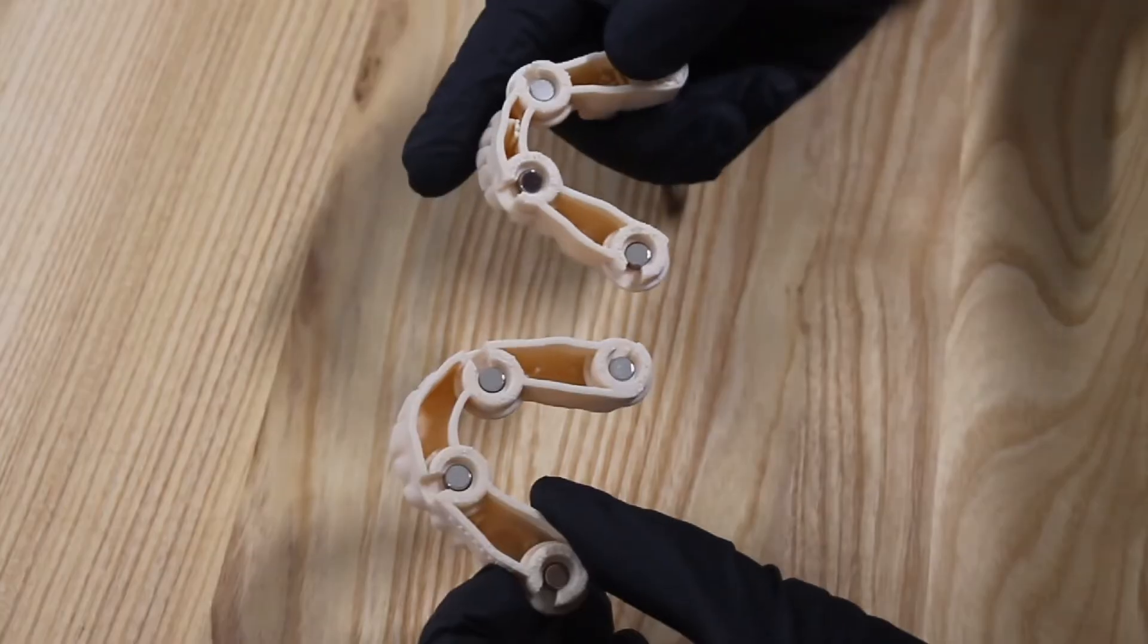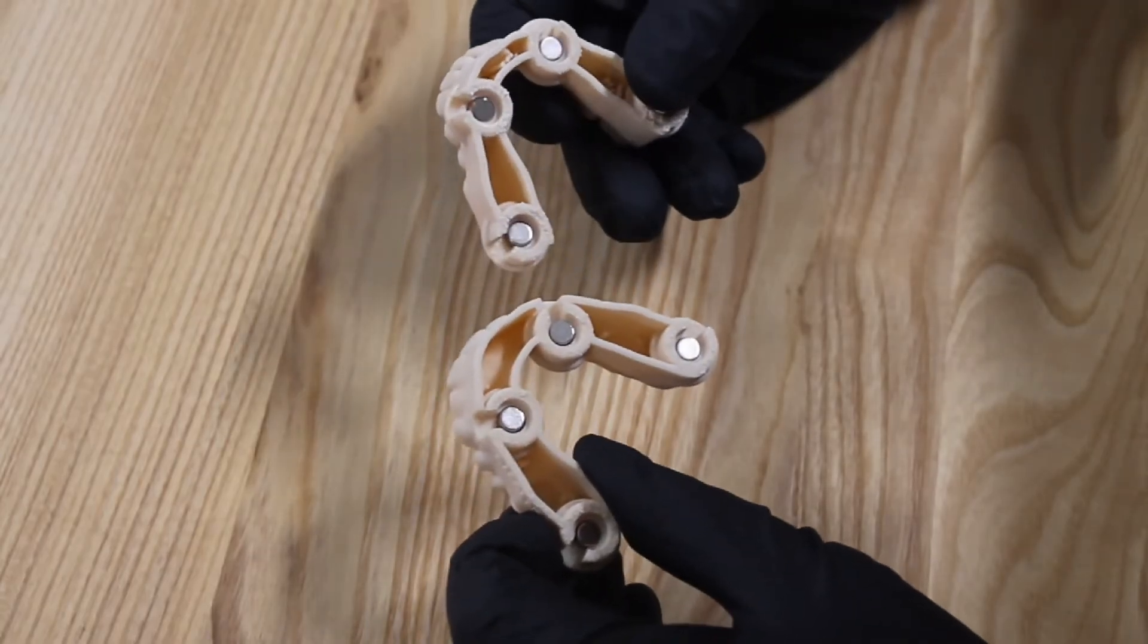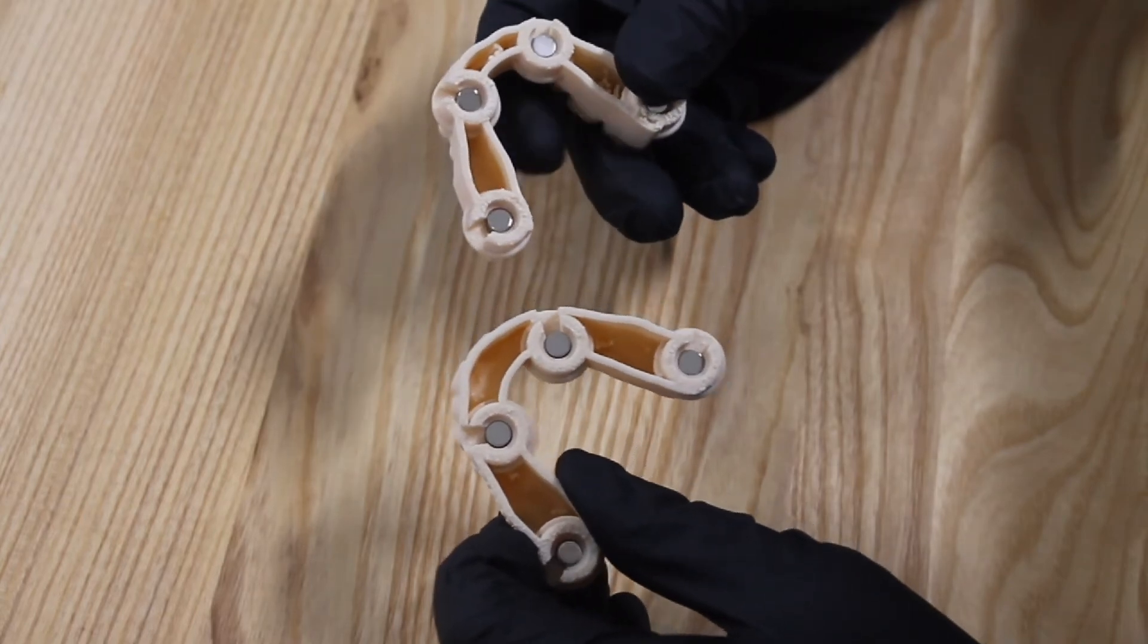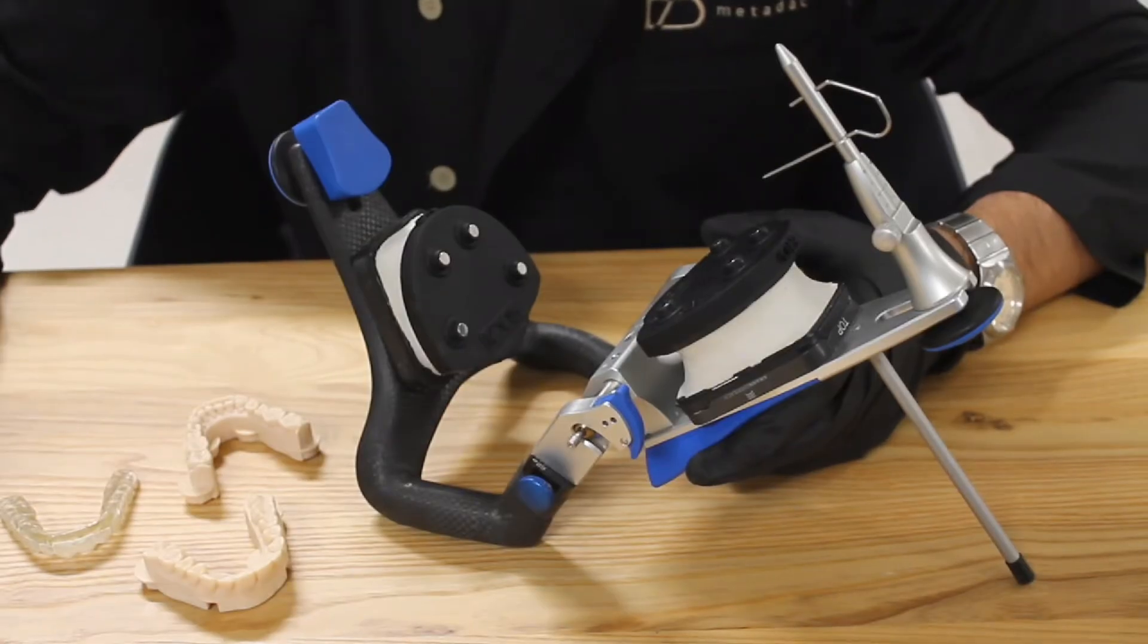Once both the upper and lower models are ready, you can position them back into the articulator. In this example, we are working with two models for a splint application.